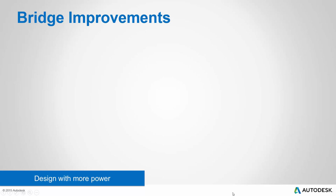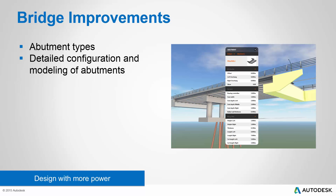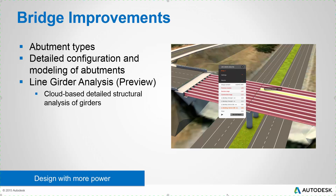Let's take a look at some bridge improvements in this summer update to InfraWorks 360. First, you'll find expanded capability with abutments — you have abutment types to choose from, and also an asset card which gives you detailed configuration and modeling capabilities. Generally speaking, you'll be able to do more than ever with the detailed design of your bridge abutments. In addition, we'll give you access to another preview feature: Line Girder Analysis. This gives you the capability to perform cloud-based, detailed structural analysis of your bridge girders. Please remember that Line Girder Analysis is a preview feature — it's not fully supported, but we'd love for you to test it out and give us your feedback.